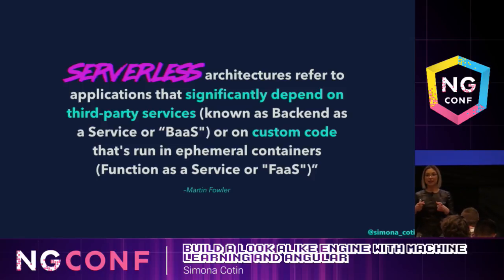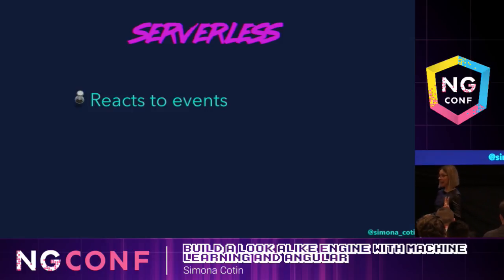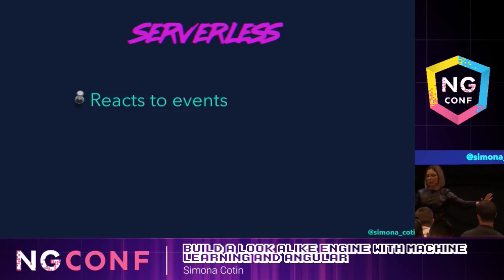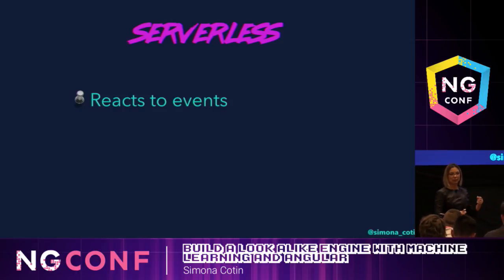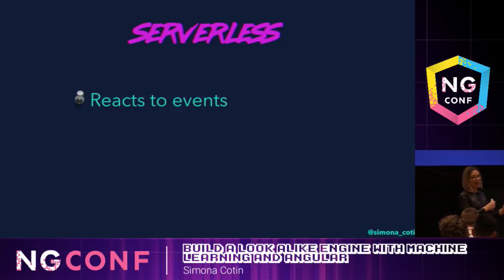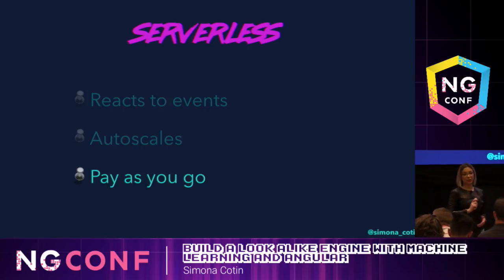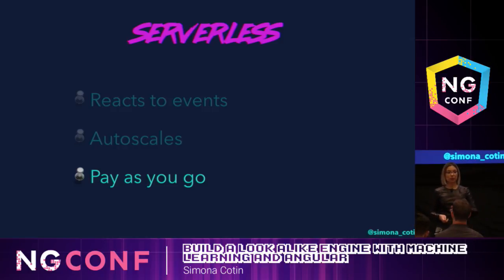The other part of serverless is the ability to write custom code using functions — that's called function as a service. There are three things that are important with serverless. First, it reacts to events: our code is stored somewhere and we listen to events like HTTP events, a message added to a queue, or a file uploaded to a storage account. Once that happens, our code is deployed in a container in the cloud, dependencies are installed, and your code runs. Then it goes back to being stored. It also auto-scales, and we only pay for the memory and CPU we're using while our code is running.